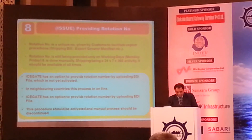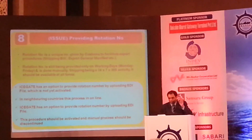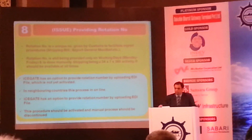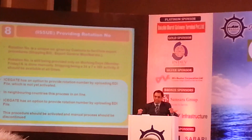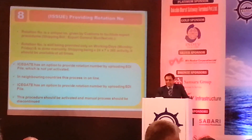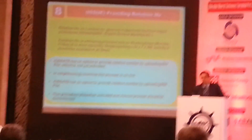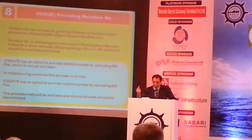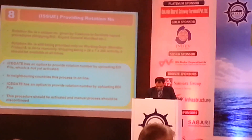The rotation number is given by customs and is used for all export cutting of containers and for the Export General Manifest. Currently the application is manual — the shipping line fills up the whole data in their system, and the customs officer also manually enters the same data into their system. This manual feeding can be stopped. There is a provision for the rotation number module but it has not been activated. What is required is simply to activate what is already in the system, which would easily save a lot of people's time and manpower.